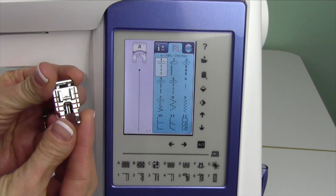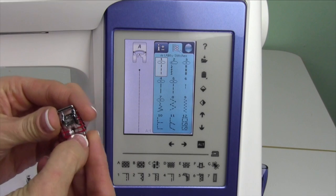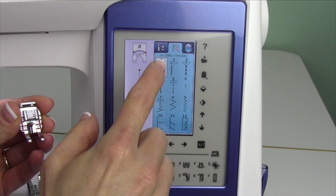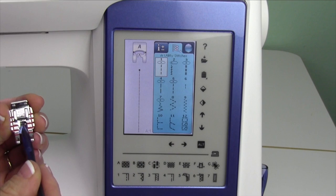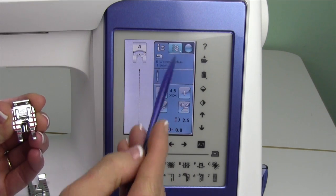With your machine, you have the quarter inch foot that is included and this is wonderful. You're going to go ahead and use it with your straight stitch and your needle will go right in the middle with a slight option.